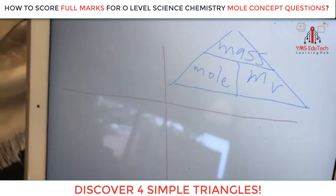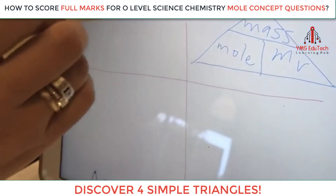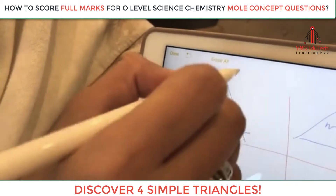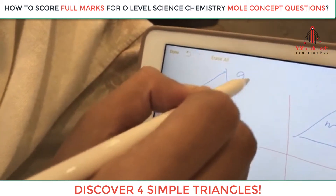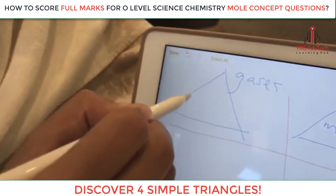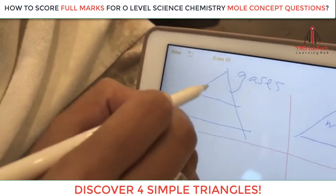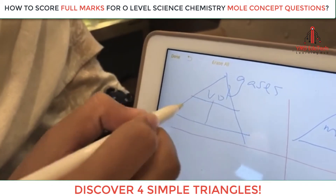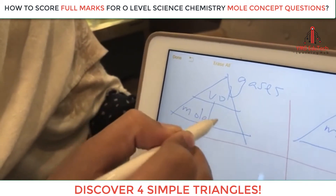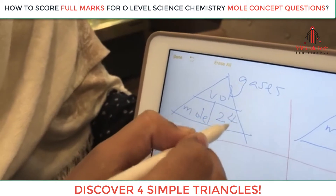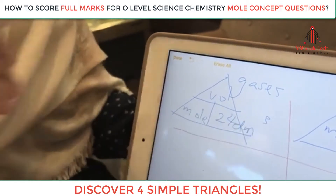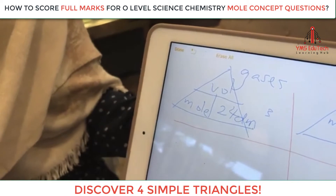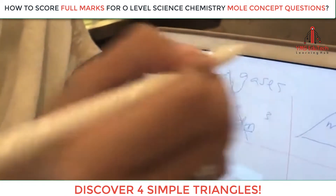The second triangle that you need to know involves volume of gases. This is only for gases, where volume is equal to mole times 24 dm³. Please remember, this is only for gases.